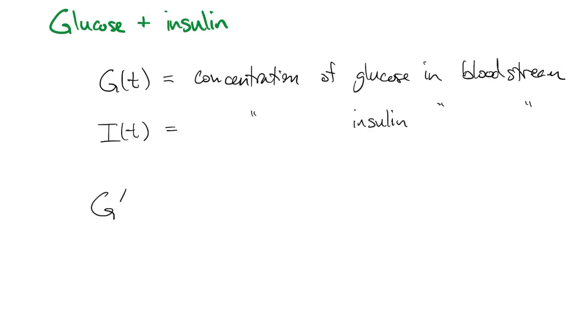So just as a top level view, the rate of change in glucose is going to have a term that's external, a forcing function, plus a term representing the variables g and i. And then insulin in a non-diabetic person has no external inputs.